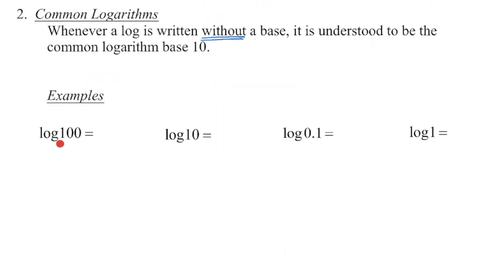If we see logarithms written without a base, these are what we call a common logarithm, and we understand that the base has a value of 10. So when we evaluate this logarithm, the exponent on base 10 that gives us a value of 100 is 2.